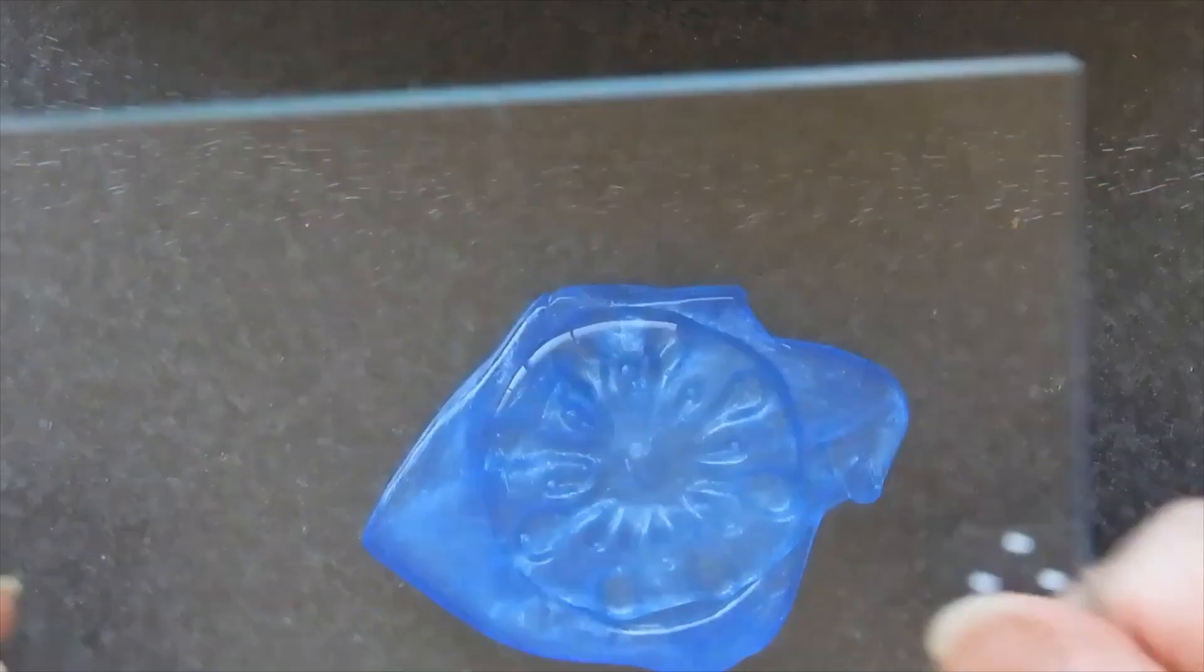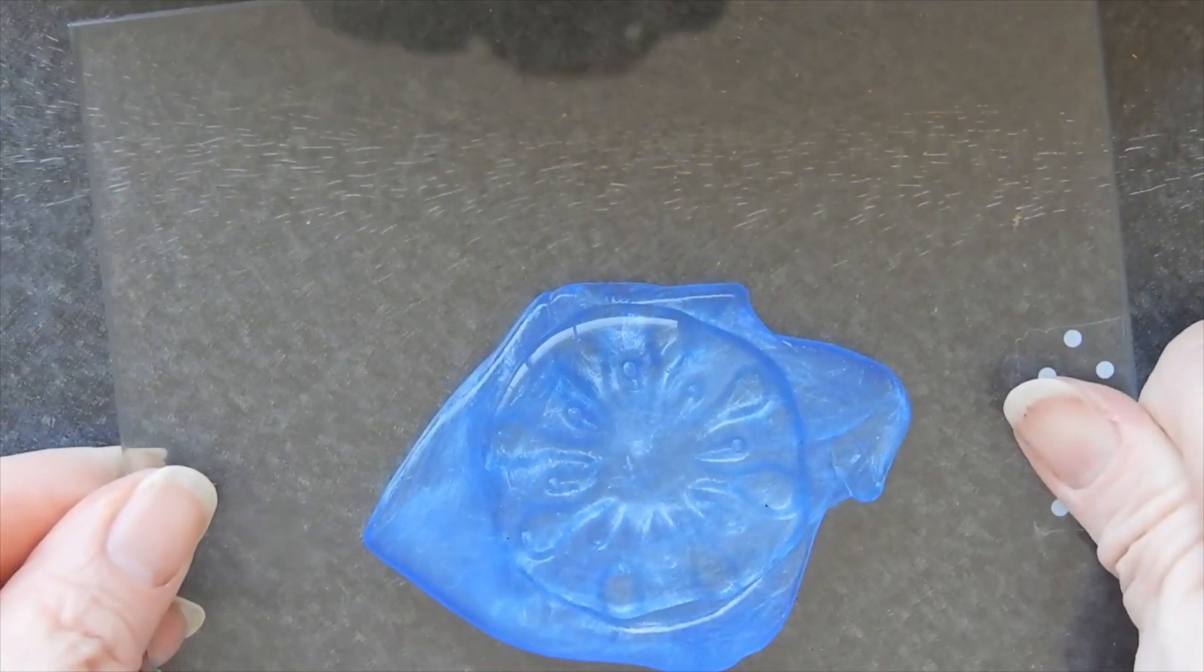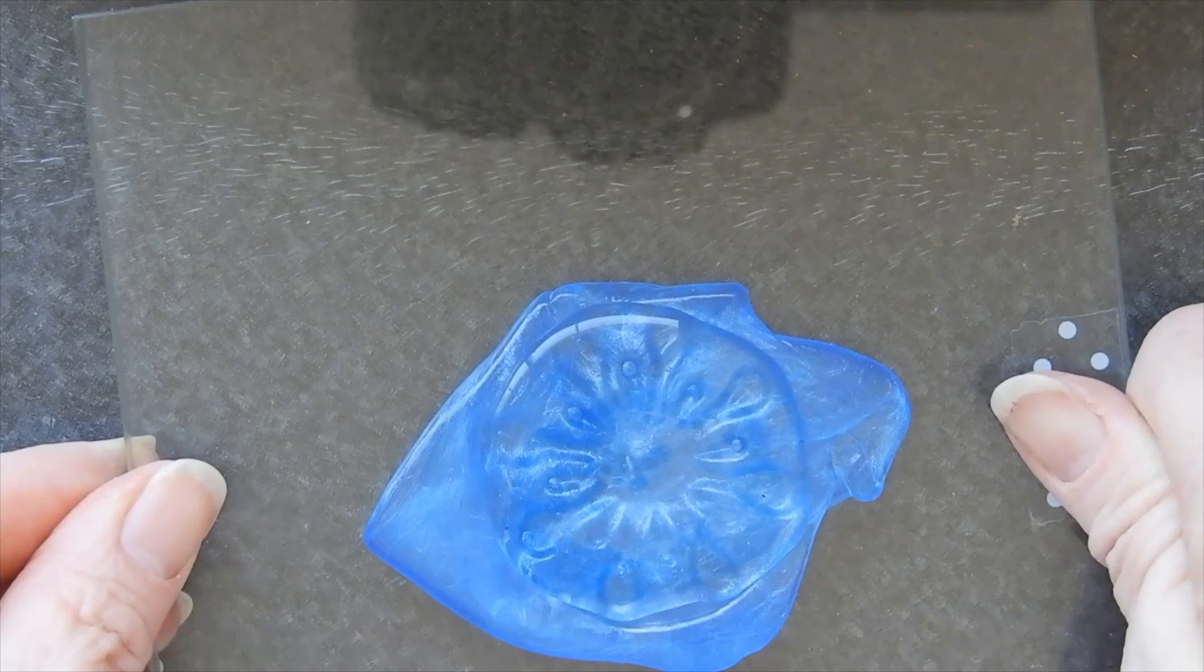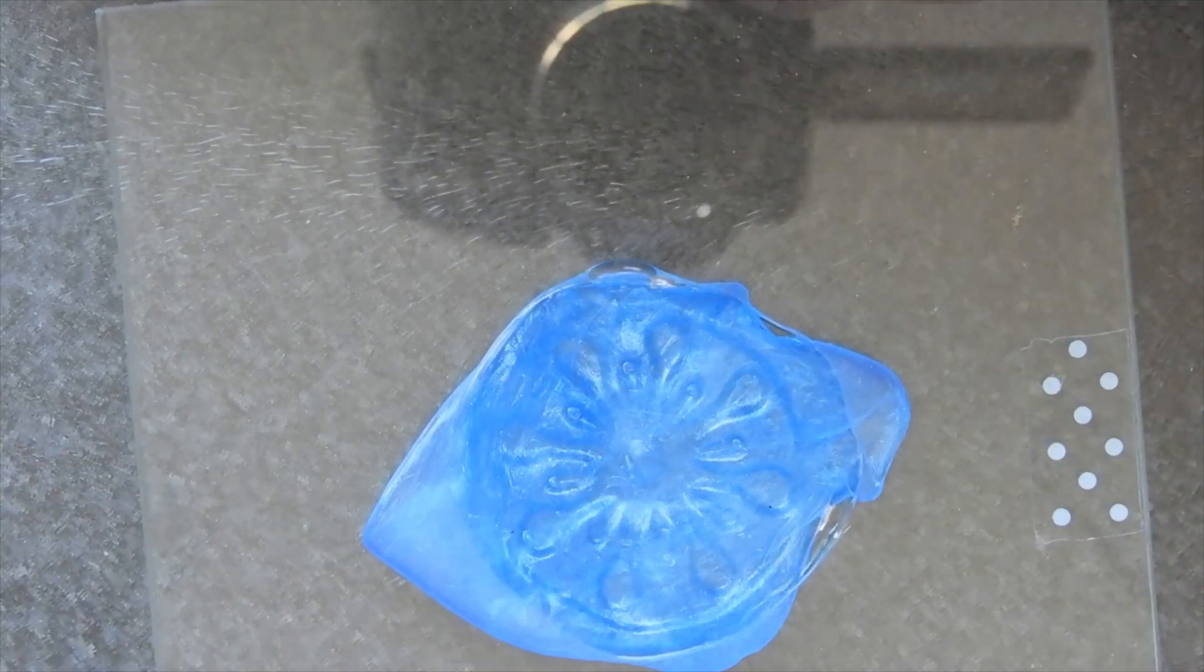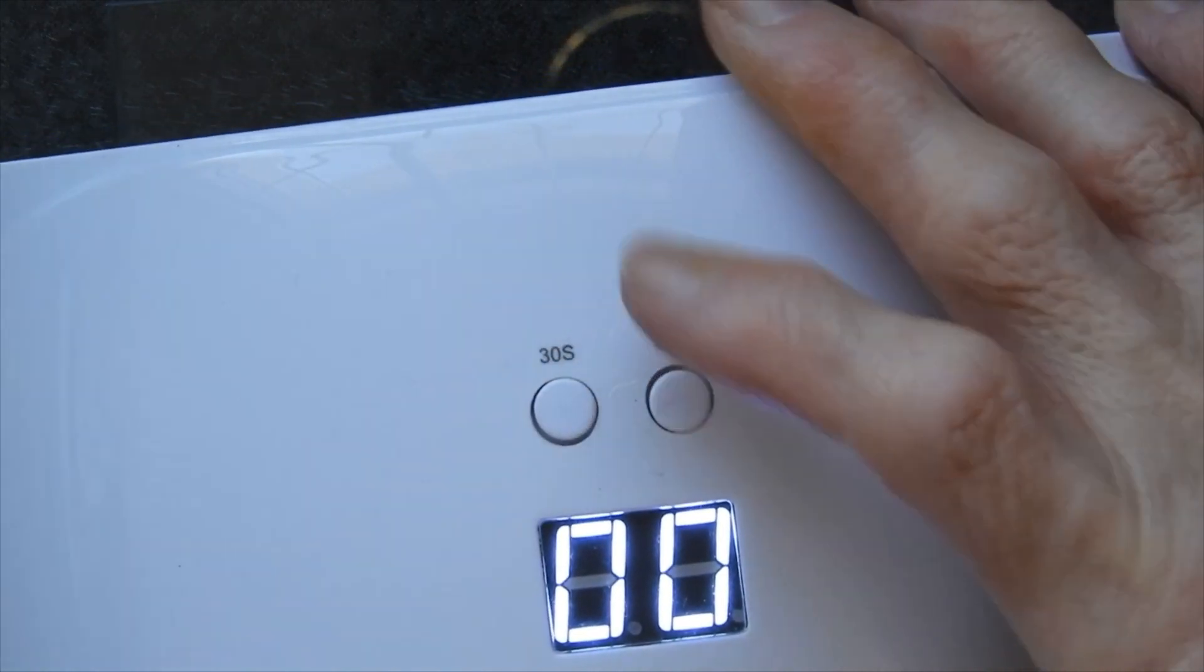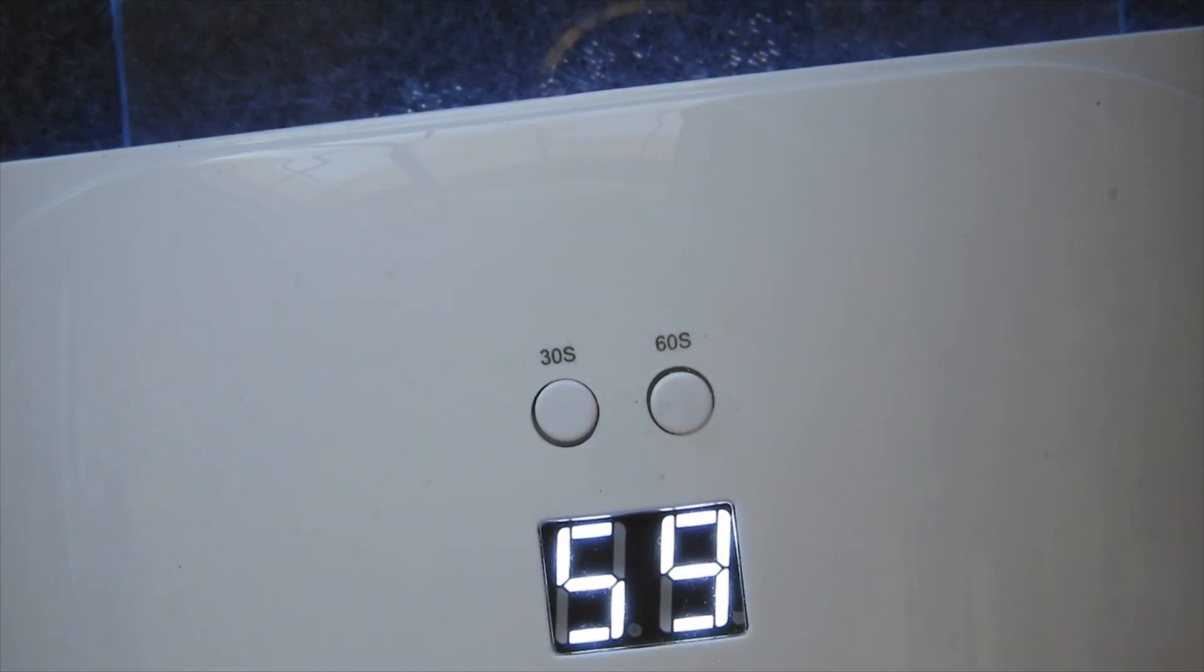So now I'm putting a piece of glass over the top of this because that is one way of making sure that the base is going to be flat, and then I cure it for three minutes under a UV lamp.